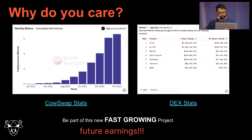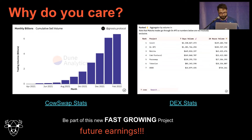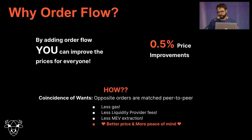If you decide to build on top of COW protocol, on top of winning this bounty, you can also have future earnings by asking the DAO to receive tokens or money for bringing order flow. Why is order flow important? One property this protocol has is that the more volume and orders we have, the better price everybody gets — you make the protocol better by bringing liquidity to it.